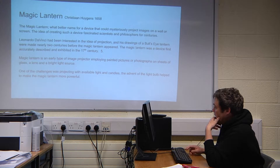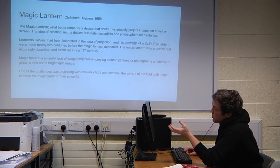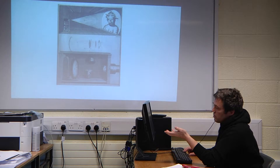The magic lantern happened around 1658 and could project images onto a wall. It used glass and paintings, and natural daylight and candles. It was quite weak, but as light bulbs were invented it became more powerful and could be shown to a bigger audience.